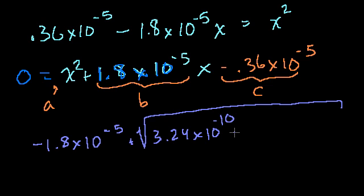Minus 4 times a, which is 1. Times c, which is minus. So it's 4 times. The minuses cancel out. Times 0.36 times 10 to the minus 5.